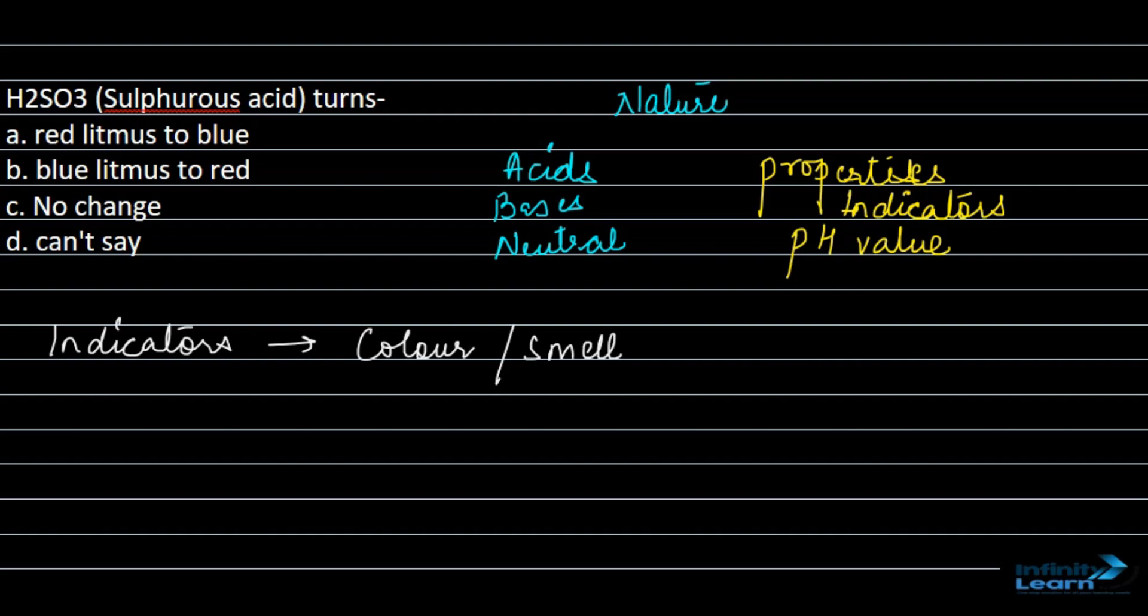Now, here in this question, we have an acid given. It is already mentioned that it is acid. Otherwise, if it is not mentioned, then you can know whether it is acid or a base depending upon when we dissolve that particular thing in water, what does it give? If it produces H positive, that means it is an acid. If it gives OH negative, that means it is a base.